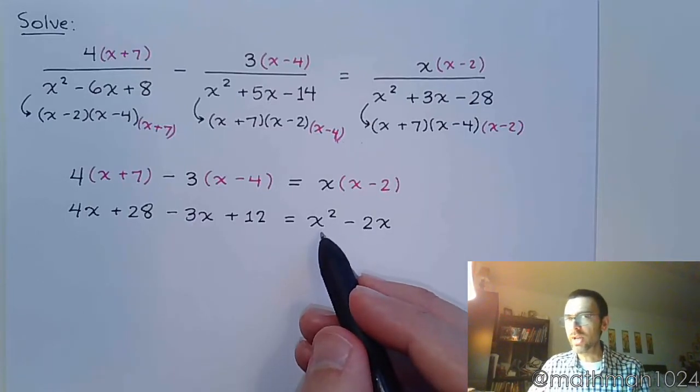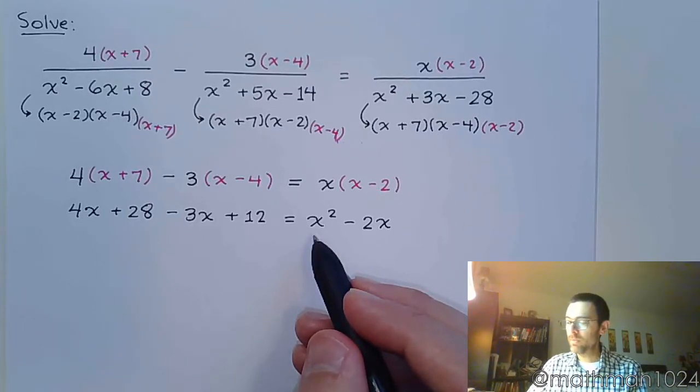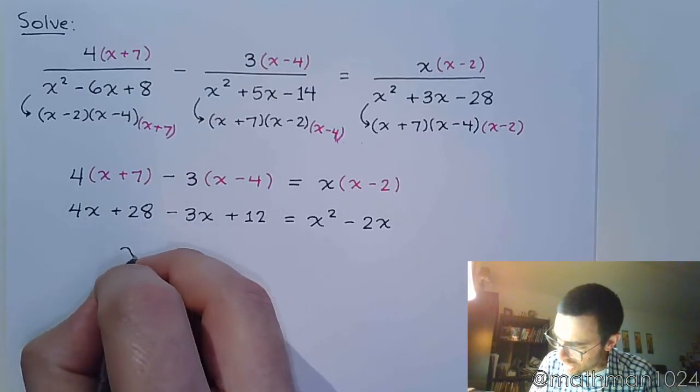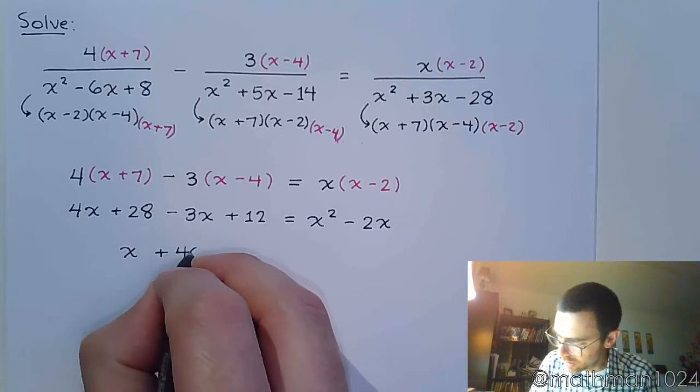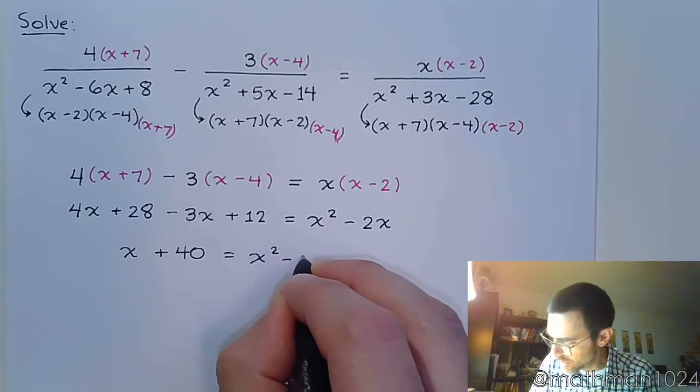All right, so I see I've got the x². That tells me this guy's quadratic, and more than likely, solving is going to include factoring. Let's go ahead and clean this up over here. So 4x - 3x is x, 28 and 12 is 40, and this equals x² - 2x.